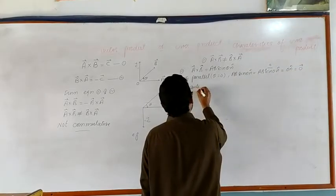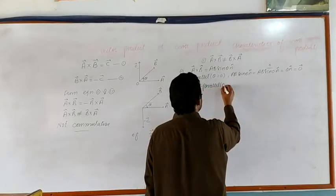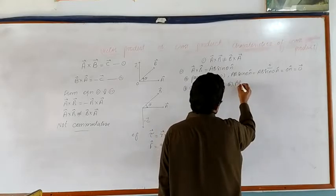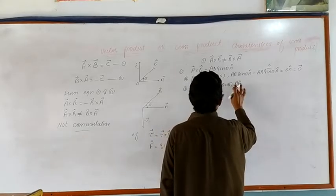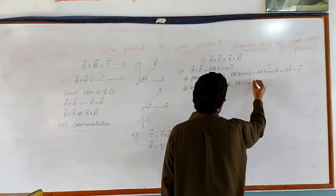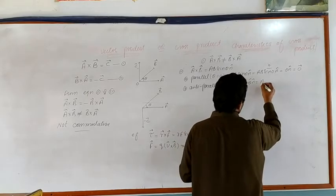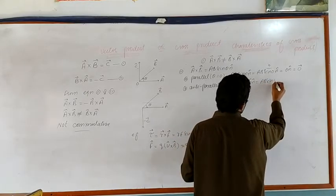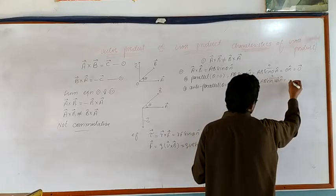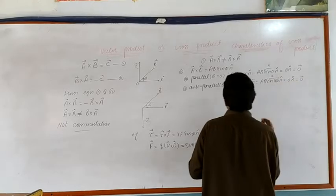Similarly, when two vectors A and B are anti-parallel to each other, the angle between them is equal to 180 degrees. Their cross product will be A B sine theta into n-hat, with theta equal to 180 degrees. Since sin(180) is also equal to 0, the resultant will be a null vector.